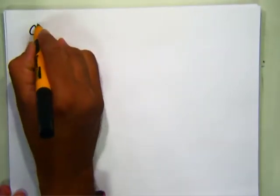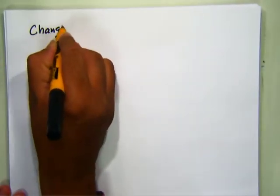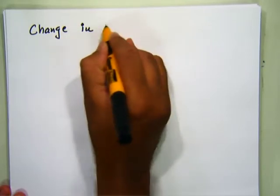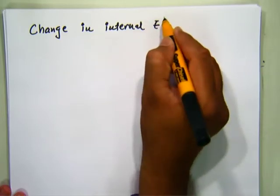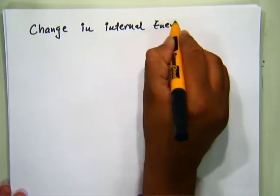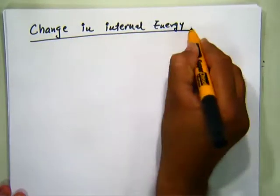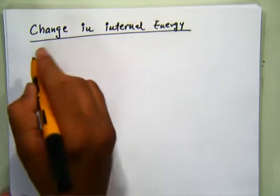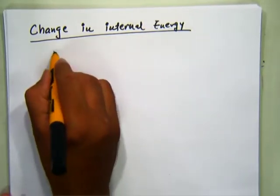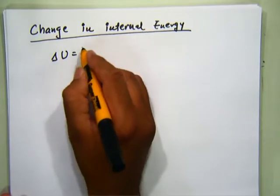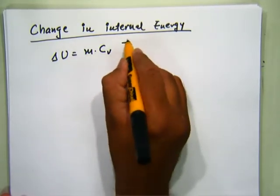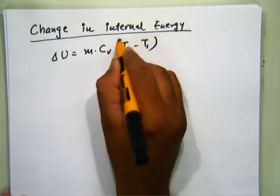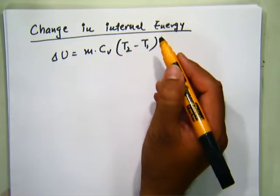Change in internal energy: as we learned earlier, delta U = m × Cv × (T2 - T1).